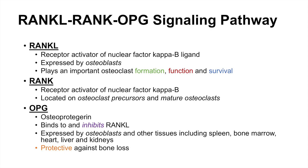If you think about it: RANKL plays an important role in osteoclast formation, function, and survival, and osteoclasts are involved in bone reabsorption. So if osteoprotegerin, or OPG, inhibits RANKL, then RANKL would not be able to activate osteoclasts. This is the reason why OPG is protective against bone loss.